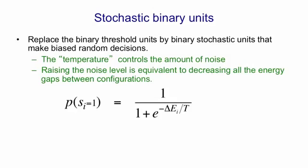This is our normal logistic equation but with the energy gap scaled by a temperature. If the temperature is very high that exponent will be roughly zero, so the right-hand side will be one over one plus one, and the probability of the unit turning on will be about a half — it'll be in its on and off states more or less equally often. As we lower the temperature, depending on the sign of delta E, the unit will either become more and more firmly on or more and more firmly off.